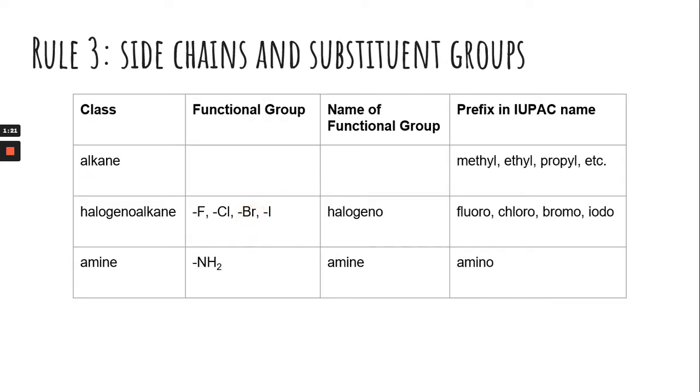So we're going to look at some examples. The side chains or groups, these are the most common three that you're going to see, where you have a chain of carbons coming off of your main chain. And so you would say methyl, ethyl, propyl. So you're taking the number of carbons and just adding a YL.